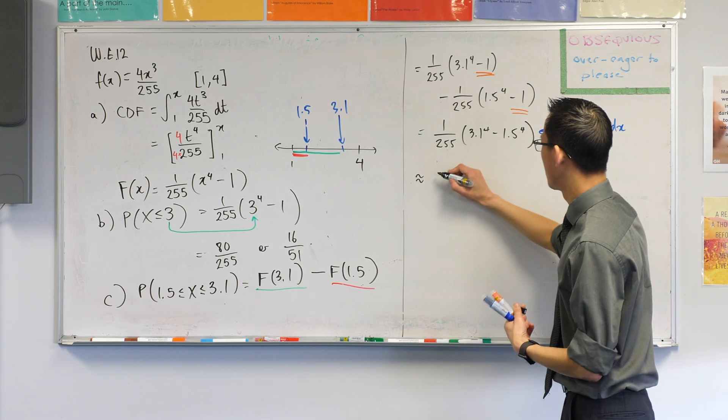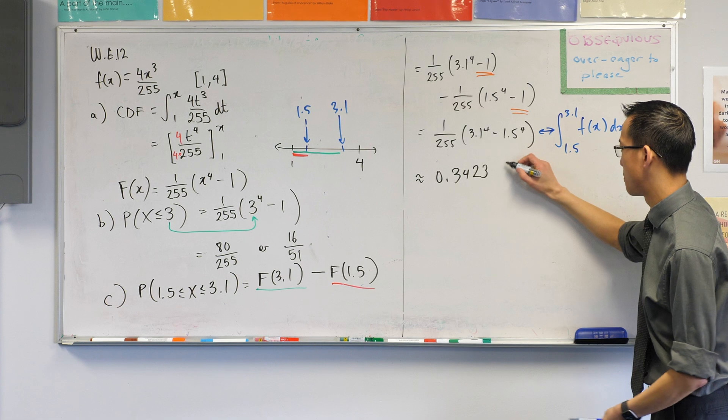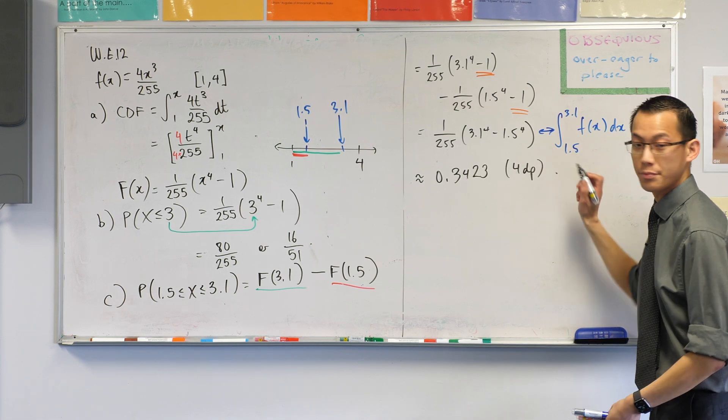And then you get your answer. What was it? 0.3423? And more decimal places, but we'll just round off. You okay with that?